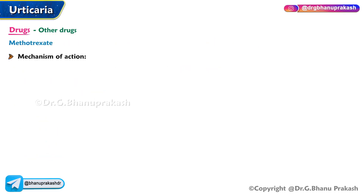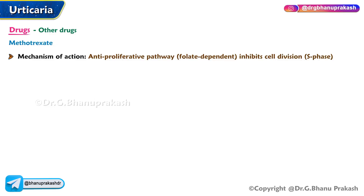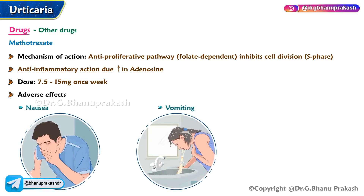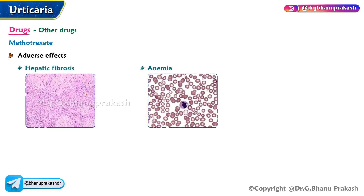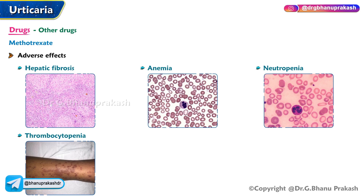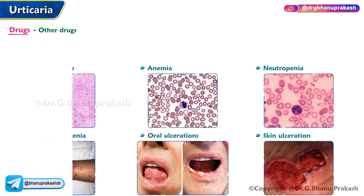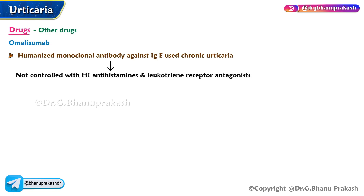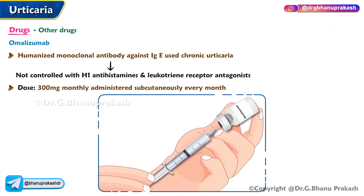Methotrexate mechanism of action: anti-proliferative via the folate-dependent pathway, inhibiting cell division in S-phase, and anti-inflammatory action due to increase in adenosine. Dose: 7.5 to 15 milligrams once a week. Adverse effects include nausea, vomiting, elevated transaminases, hepatic fibrosis, anemia, neutropenia, thrombocytopenia, oral ulcerations, and skin ulceration. Omalizumab is a humanized monoclonal antibody against IgE used in chronic urticaria not controlled with H1 antihistamines and leukotriene receptor antagonists; recommended dose is 300 milligrams monthly administered subcutaneously.